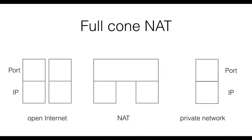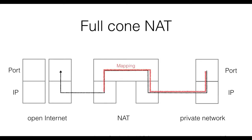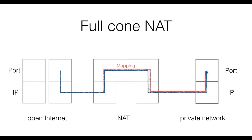Full cone NAT is also known as static NAT or one-to-one NAT. If a connection from a private IP-port pair is opened towards the open Internet, NAT creates a mapping between the internal IP-port and the public IP-port. Every subsequent packet from the same private IP-port will be forwarded to the open Internet as the public IP-port pair. Full cone NAT allows every connection with destination the public IP-port pair from any source port on the Internet to be forwarded to the private IP-port — including reply traffic or any other incoming traffic. Full cone NAT is the most permissive form and essentially is a form of port forwarding.